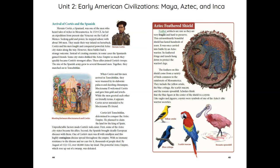Aztec Feathered Shield: Feather artifacts are rare, as they are very fragile and hard to preserve. This extraordinarily beautiful shield has lasted hundreds of years. It was once carried into battle by an Aztec warrior. Its feathered fringe and tassels hung down to protect the warrior's legs. The feathers come from a variety of birds common to the rainforests of Mesoamerica, including the yellow oriole, the blue cotinga, the scarlet macaw, and the roseate spoonbill. Scholars think that the blue figure at the center of the shield is a coyote. Like eagles and jaguars, coyotes were symbols of one of the Aztec's elite warrior societies.